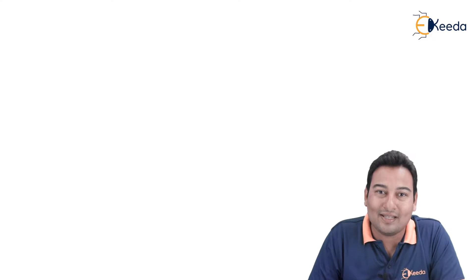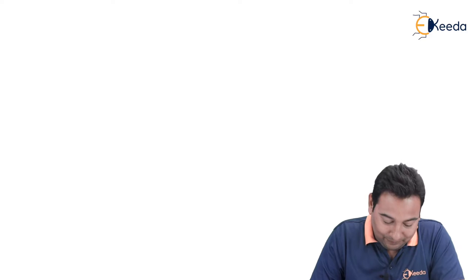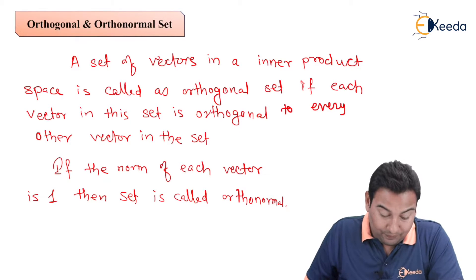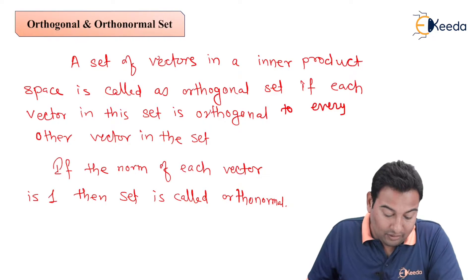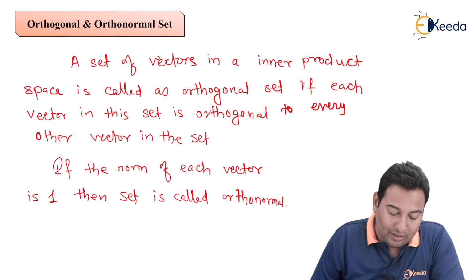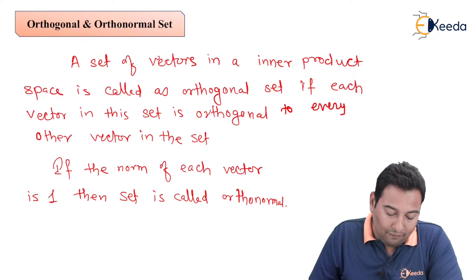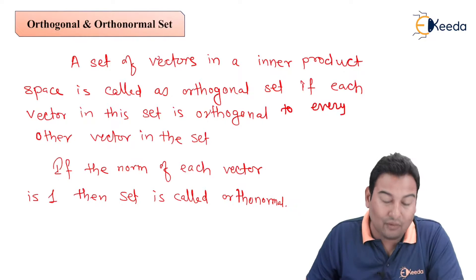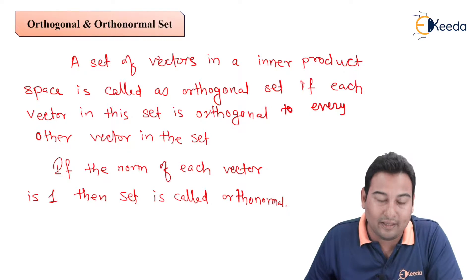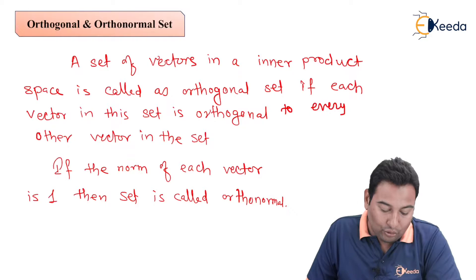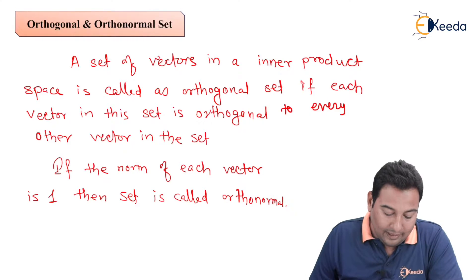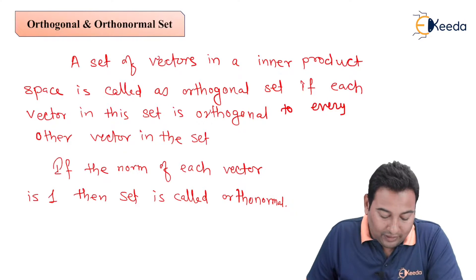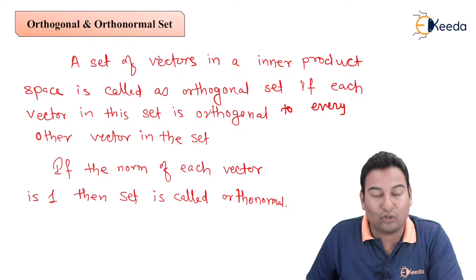Welcome back friends. First of all, let us see what exactly is an orthogonal set and an orthonormal set. A set of vectors in an inner product space is called an orthogonal set if each vector in this set is orthogonal to every other vector in the set. If the norm of each vector is 1, then the set is called orthonormal.